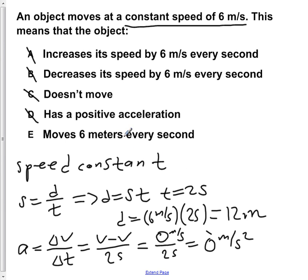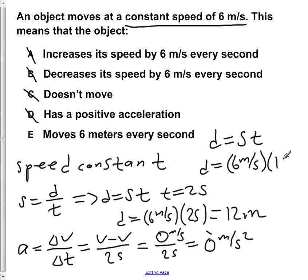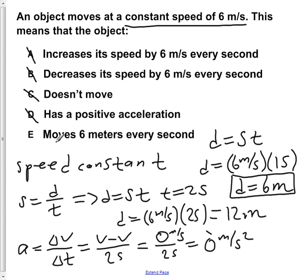Finally, E states that we move 6 meters every second. Returning to the equation distance equals speed times time, and plugging in T as 1 second, we get D equals 6 meters per second times 1 second, which gives us 6 meters. So for every second, because we are moving at a constant speed, our distance traveled is 6 meters as stated in E. Therefore E is correct.